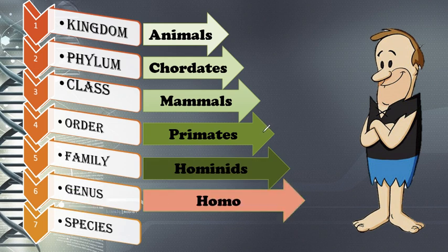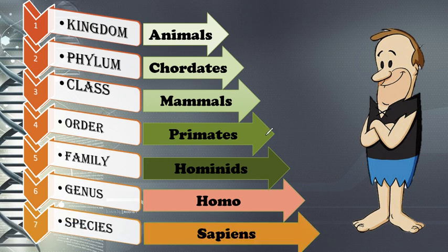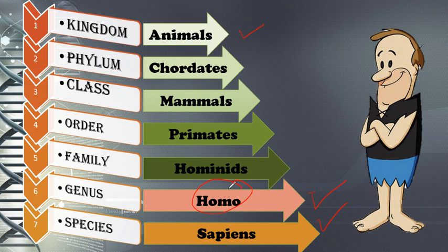Our family is Hominidae, our genus is Homo, and our species is sapiens. So the scientific name of humans is Homo sapiens. The scientific name is made up of the genus and the species.